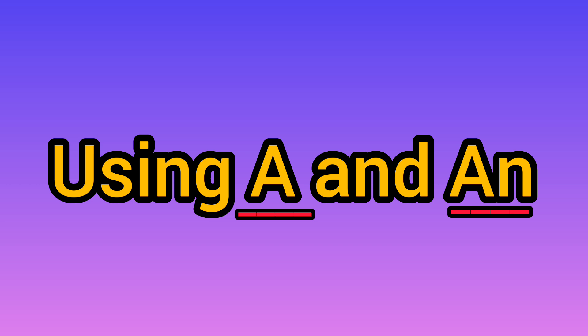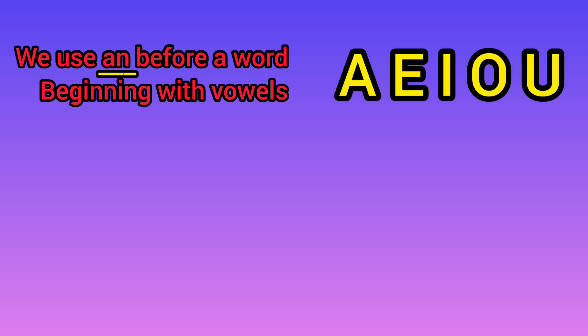Using A and AN. We use AN before a word beginning with vowels: A, E, I, O, U.